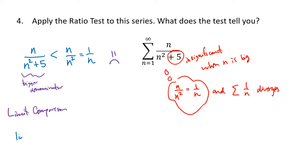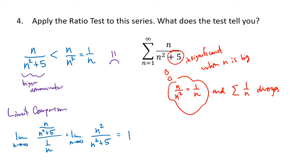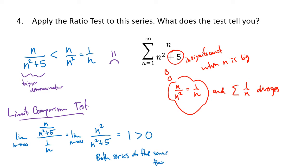We can still do our comparison — we just need to use the limit comparison test. We put the series we have on top and the series we're comparing to on the bottom. Flipping and multiplying gives us n squared divided by n squared plus 5, and dividing top and bottom by n squared gives a limit of 1. In the limit comparison test, getting a positive finite number means both series do the same thing — unlike the ratio test where 1 was inconclusive. Since the series 1 over n diverges, the series n divided by n squared plus 5 also diverges.